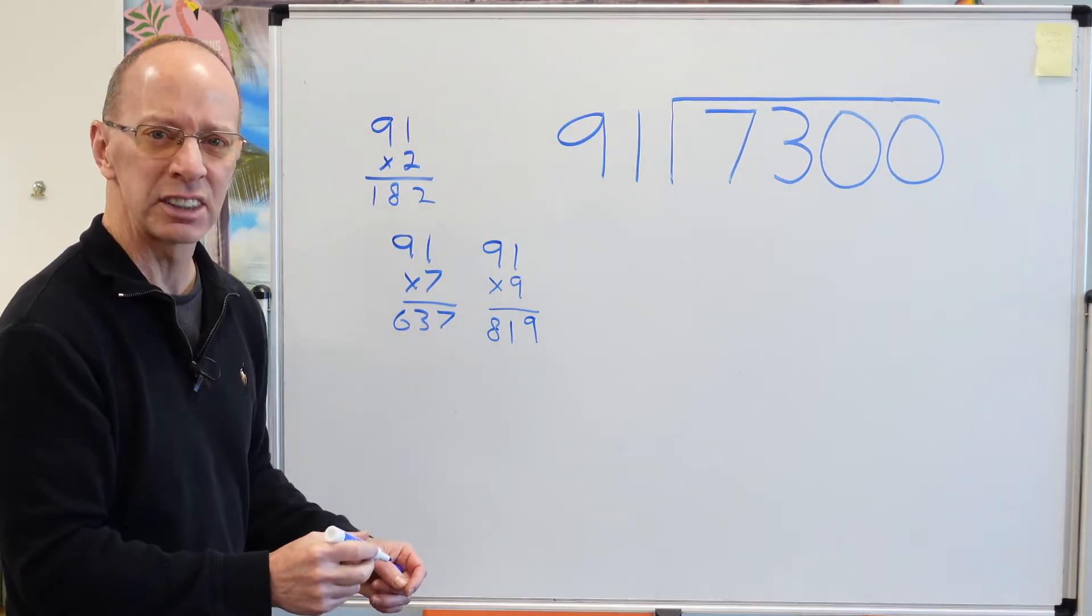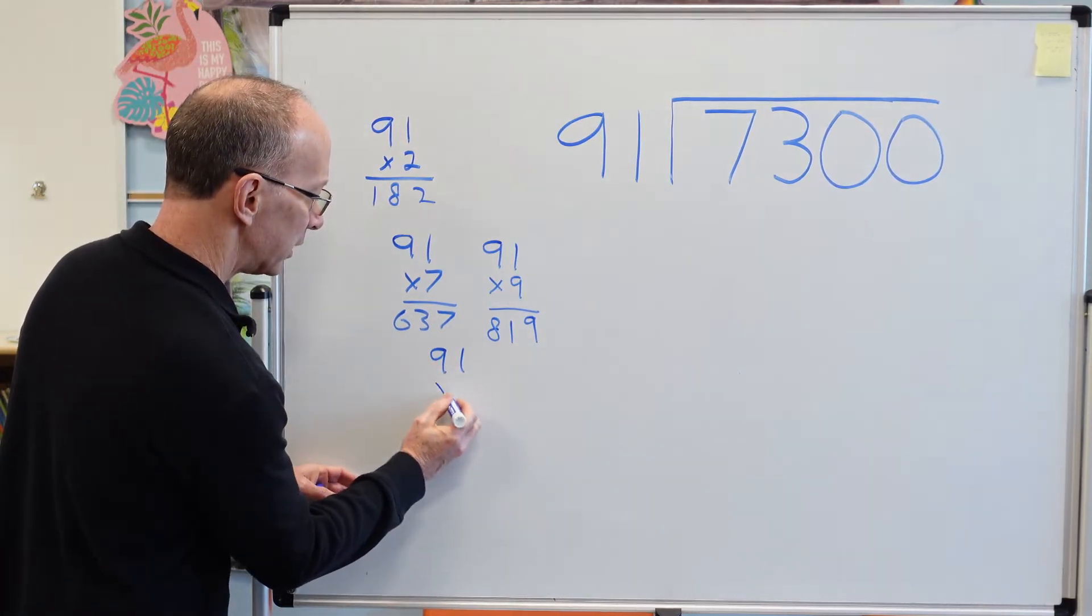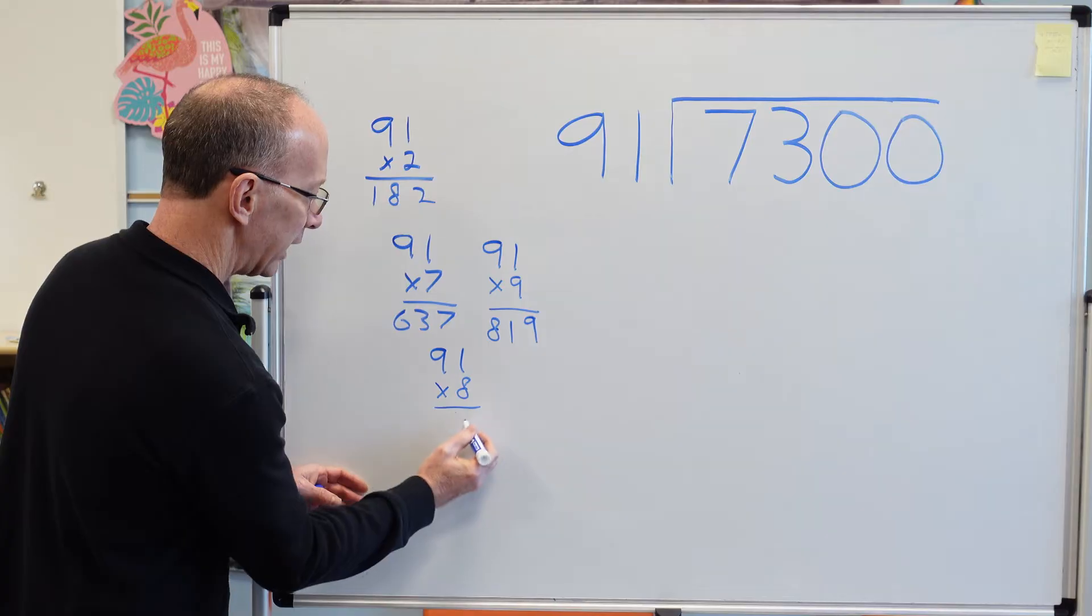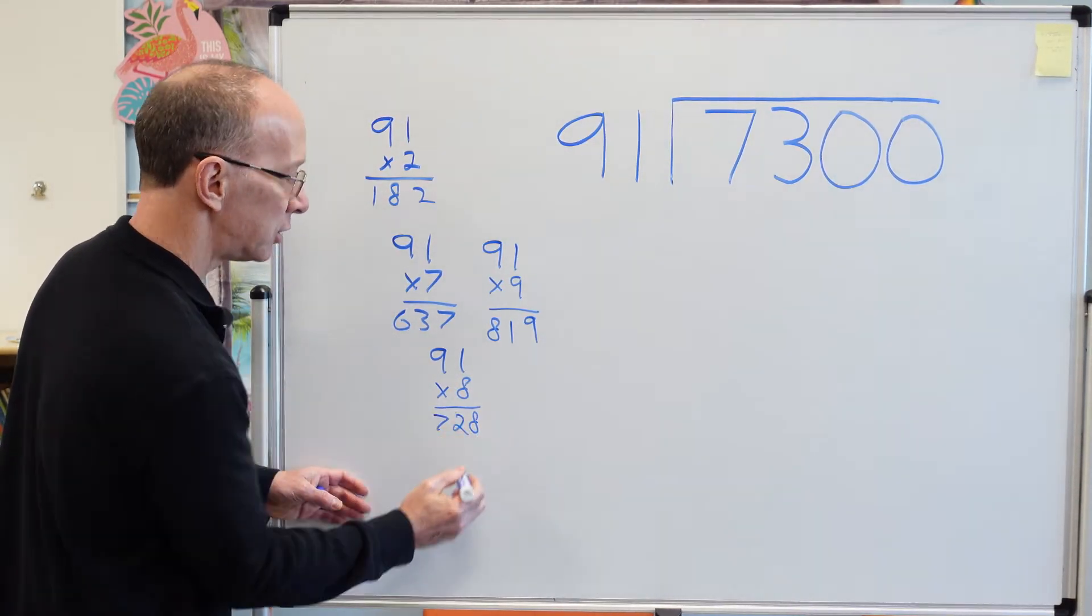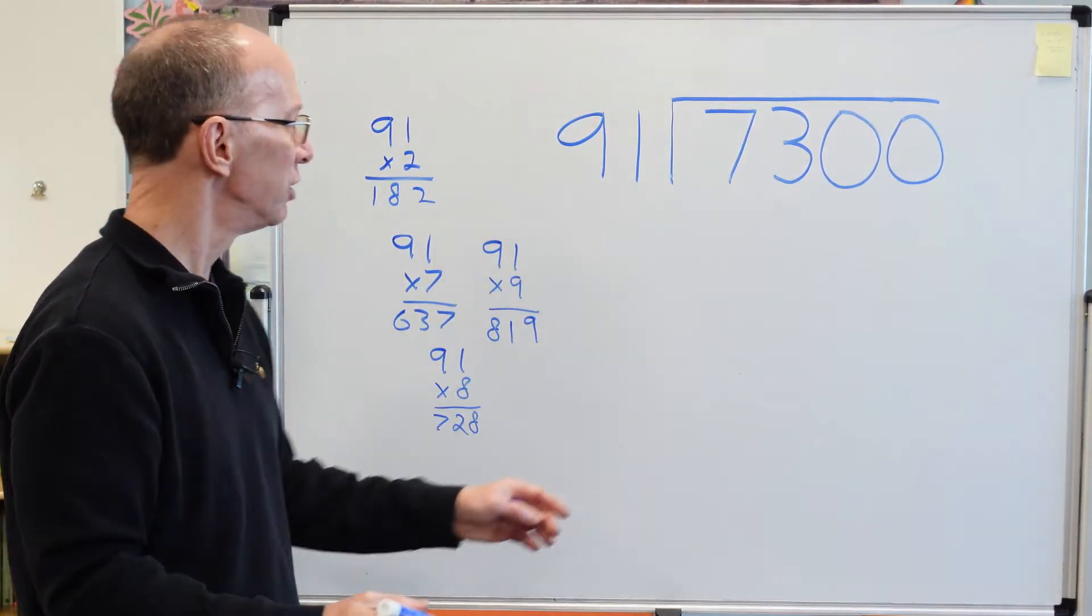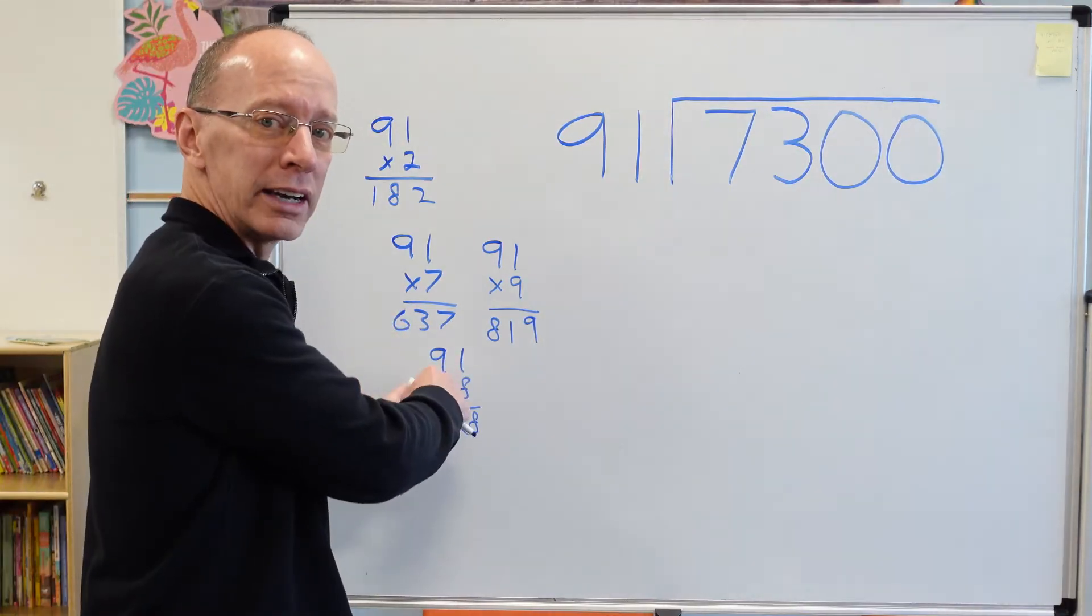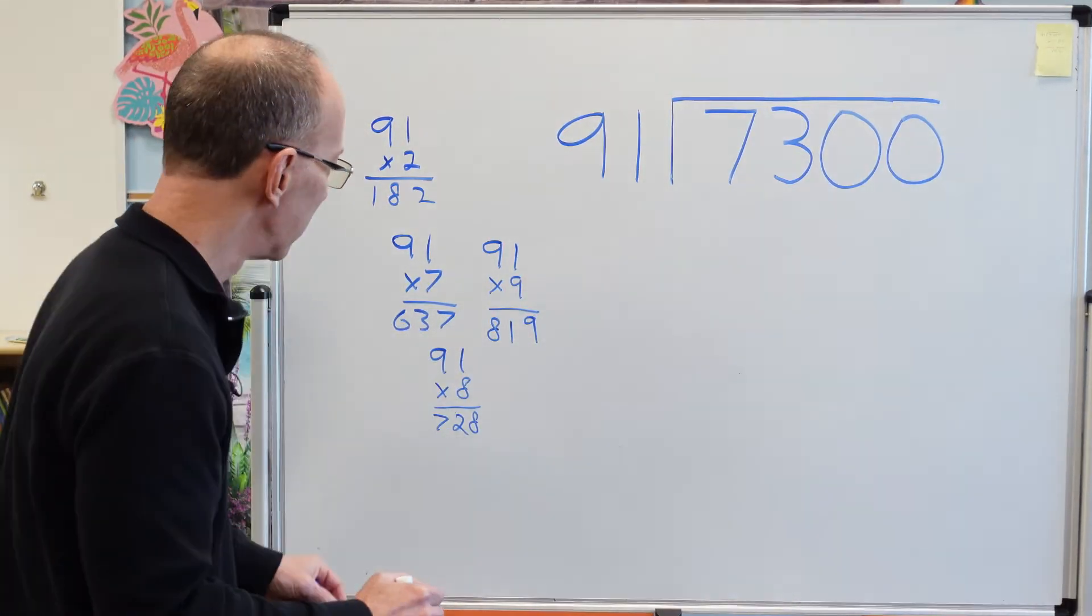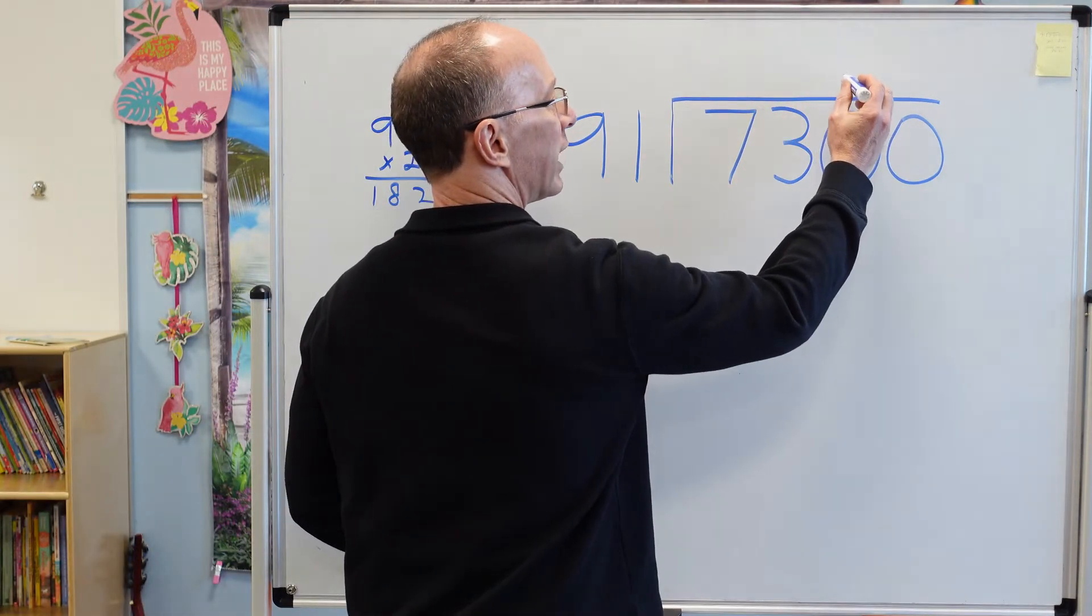Let's see if 91 times 8 is a little closer. So 91 times 8: 8 times 1 is 8, 9 times 8 is 72. I think that would be a good choice. Now on big numbers like this, you need to do a little calculation, and this work right here will make it a lot easier for you. So I'm going to go ahead and put 8 right here, right above that 0.